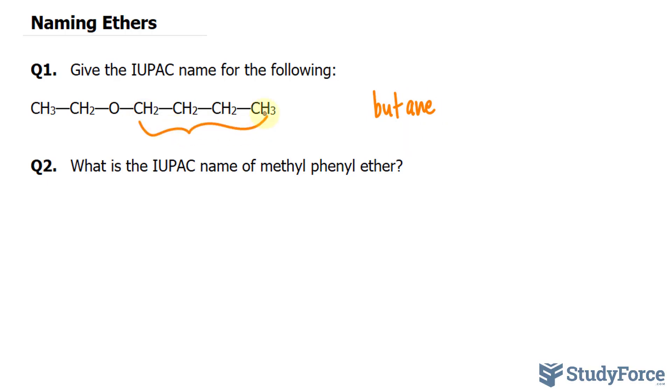Next, we'll name the oxygen and the smaller alkyl group as an alkoxy group. We have two carbons here. That gets the prefix eth, and this prefix will end with oxy. So this part is ethoxy.